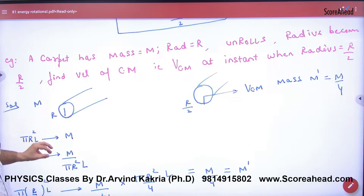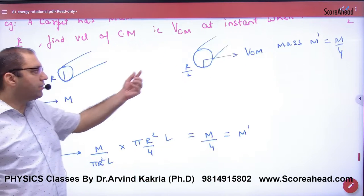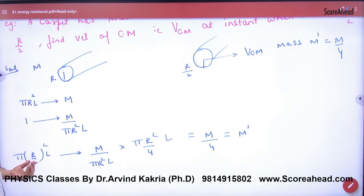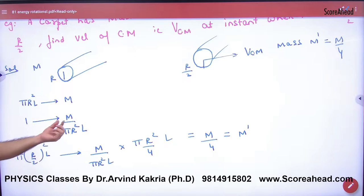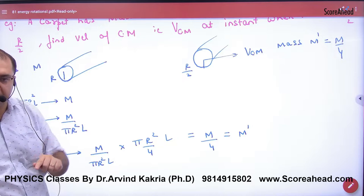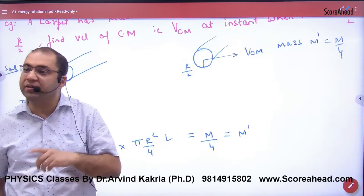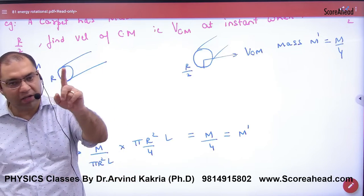If it is 1, then M upon π R² L. And if its radius is R by 2, then the volume is π (R/2)² L. So mass can be calculated. The corresponding mass will be M by 4. So when the radius was R, the mass was M. When the radius is R by 2, the mass is M by 4. So mass comes out this way.